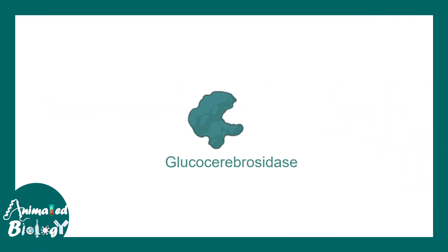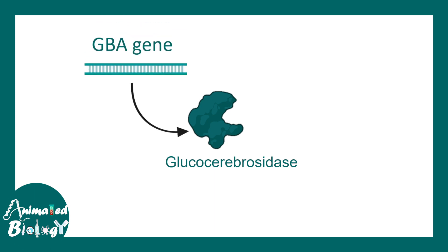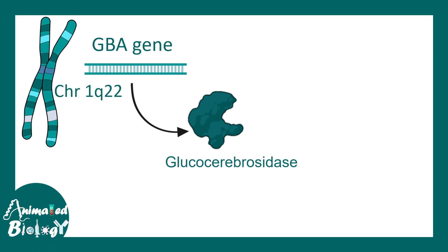Glucocerebrosidase is the enzyme that breaks down glucocerebroside, and it is encoded by the gene GBA, which is located on chromosome 1.